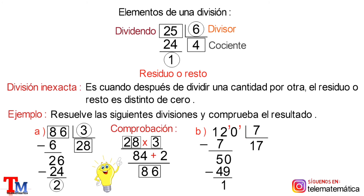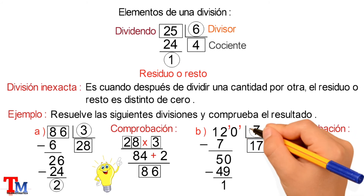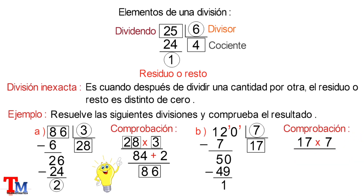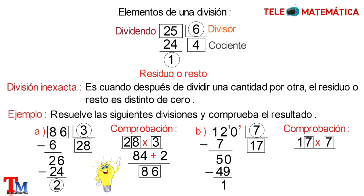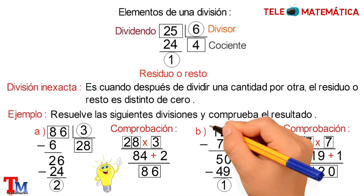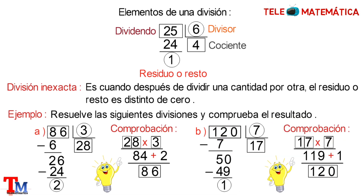De forma similar, para verificar que el proceso realizado está correcto, realizaremos la comprobación, multiplicando el cociente y el divisor. Multiplicamos 7 por 7, que es igual a 49; escribimos el 9 y llevamos 4. Multiplicamos 7 por 1, que es igual a 7, y 4 que llevamos es igual a 11. A este resultado le sumamos el residuo obtenido, el número 1, y resolviendo la operación nos quedaría 120. Como el resultado es igual al valor del dividendo, entonces el proceso realizado es correcto.